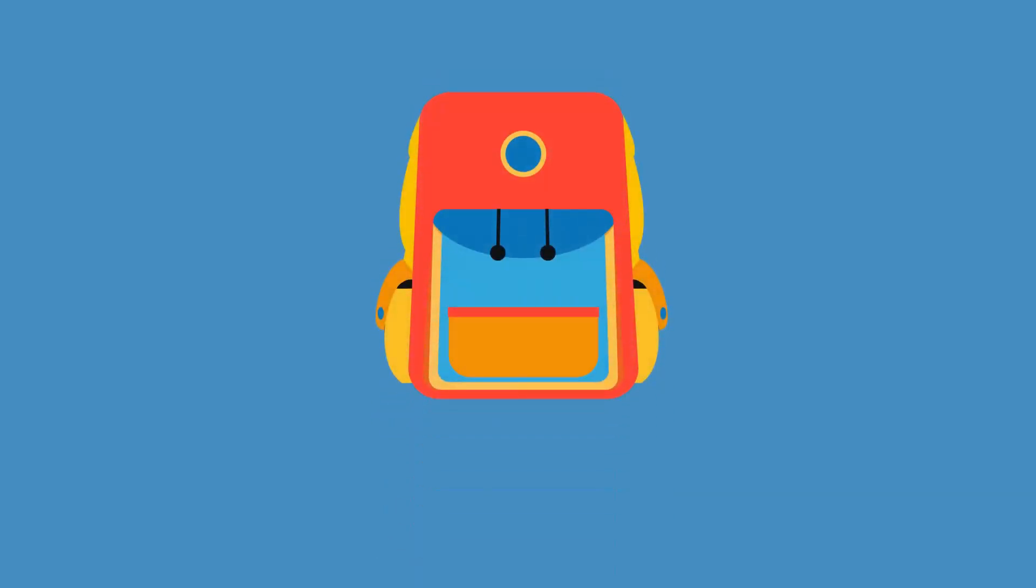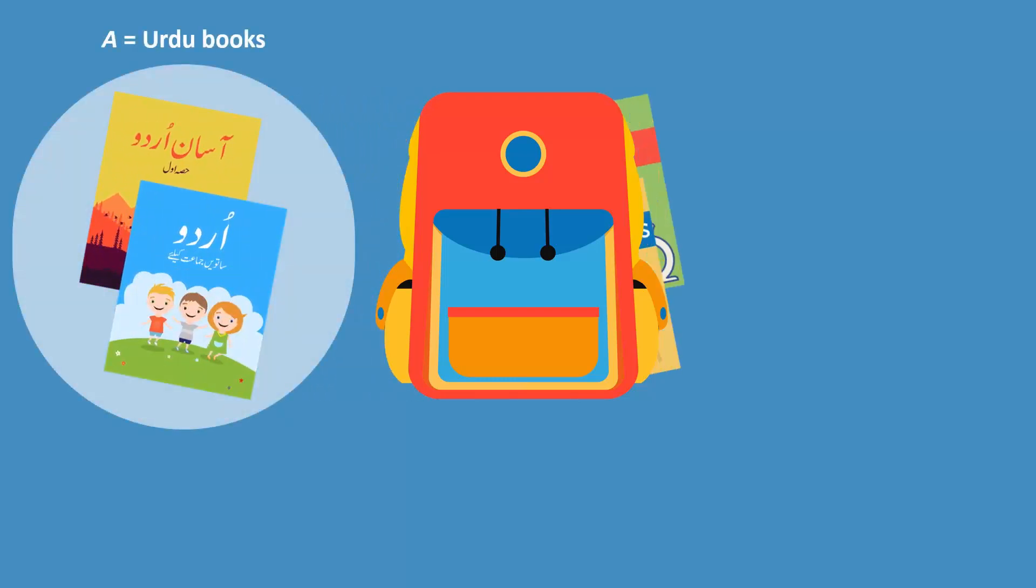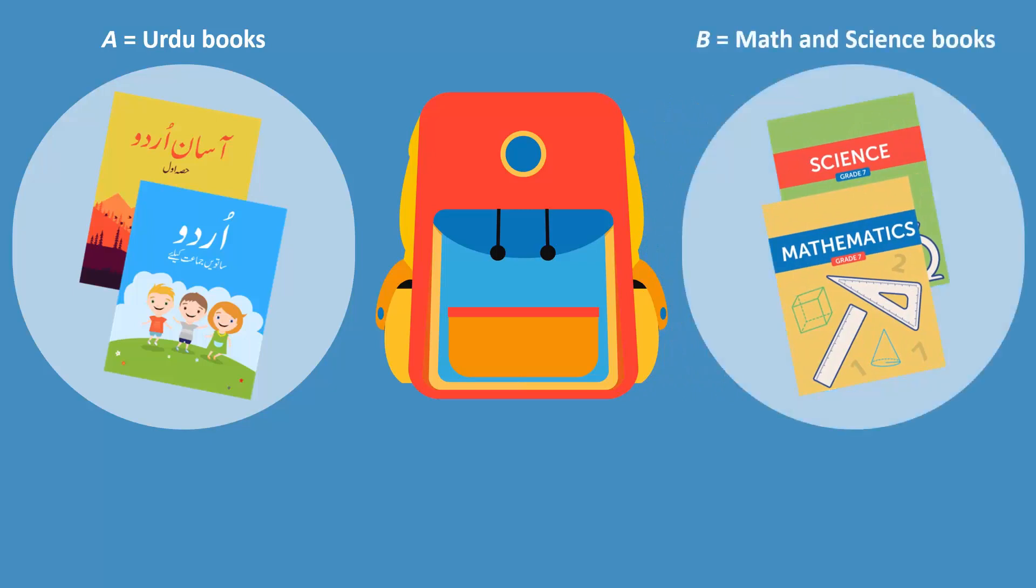Consider a school bag which contains all the books belonging to Aiza. She likes organizing her books by subject. So, Urdu books are placed in a group called set A, and math and science books in a group called set B. We say that the school bag contains books belonging to both sets A and B.